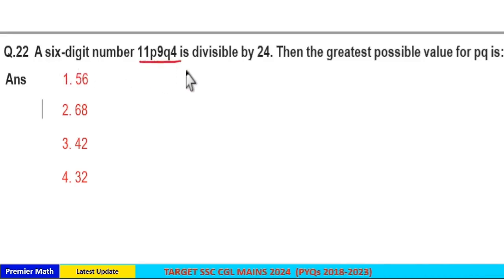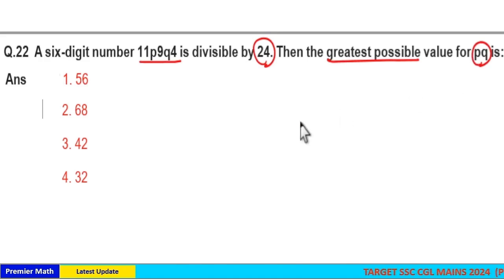A 6-digit number 11P9Q4 is divisible by 24. Then the greatest possible value for PQ is.